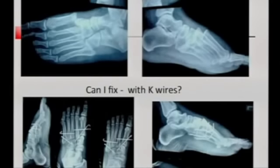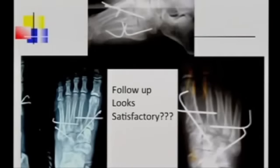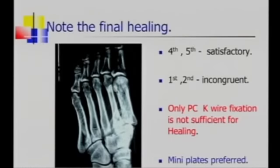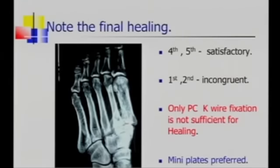Can we treat them with K-wires? I have treated a case with K-wires — all dislocated, fixed nicely with K-wires and it looked satisfactory. But look at the end result: the first and second landed up in arthritis. Only 4 and 5 were good. So, no fixation of the first, second, or third with K-wires, because they need to be removed in 6 weeks while these injuries require at least 3 months to heal. No K-wires for Lisfranc injuries — only 4 and 5 can be fixed. This is the second important take home message.